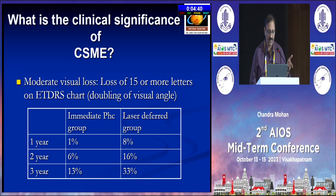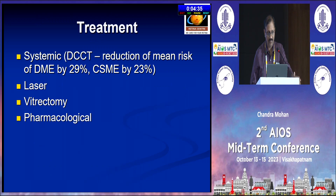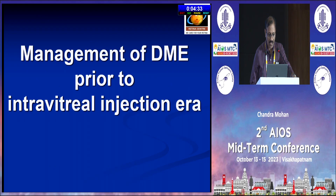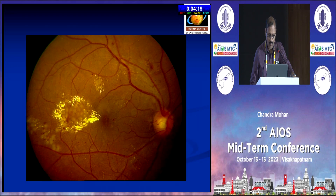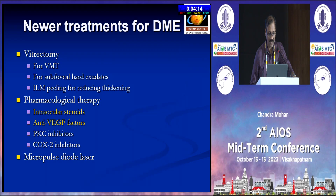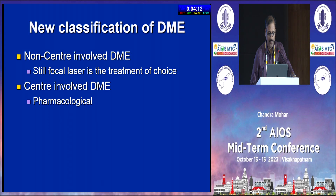To prevent moderate vision loss, this CSME criteria was very important. Prior to anti-VEGF intravitreal injections, the management was: define macular edema as CSME, if it is CSME do focal laser wherever possible, and do PRP after that. This was the classic management of a CSME case with focal laser. But now with the advent of newer intravitreal injections, the definition has changed.